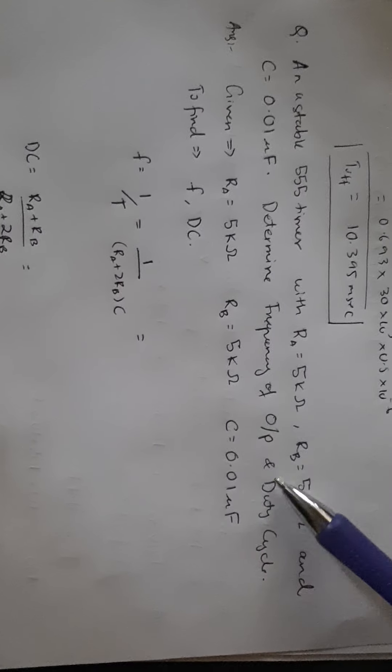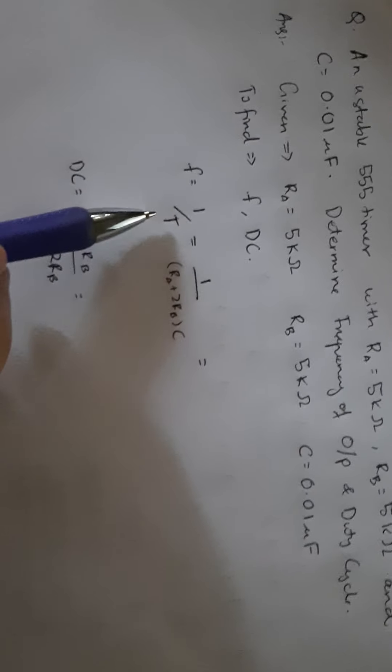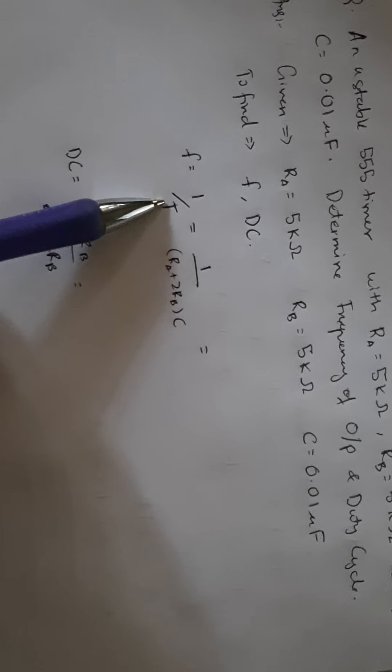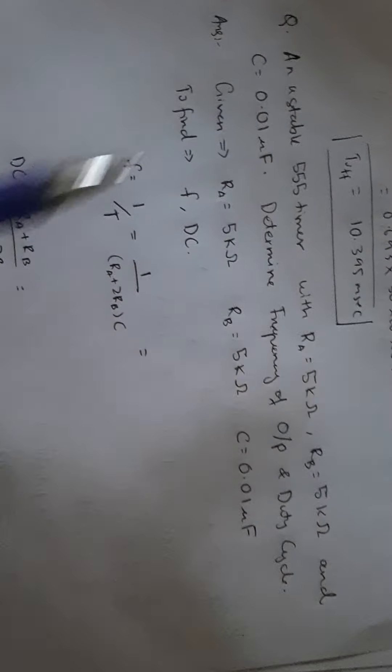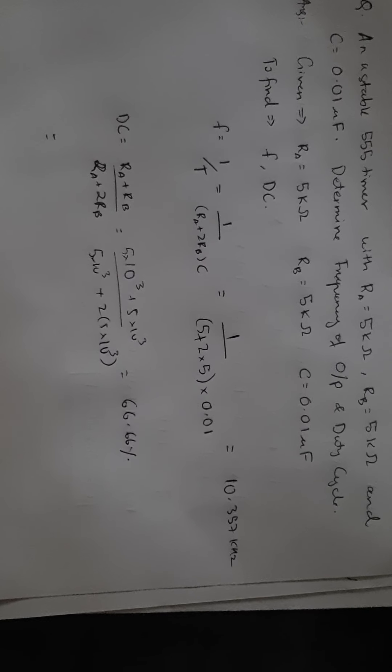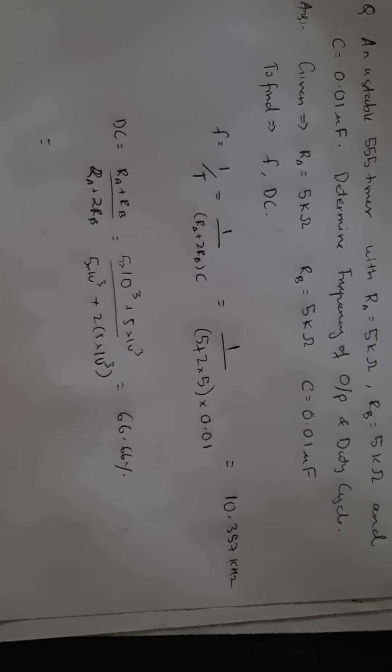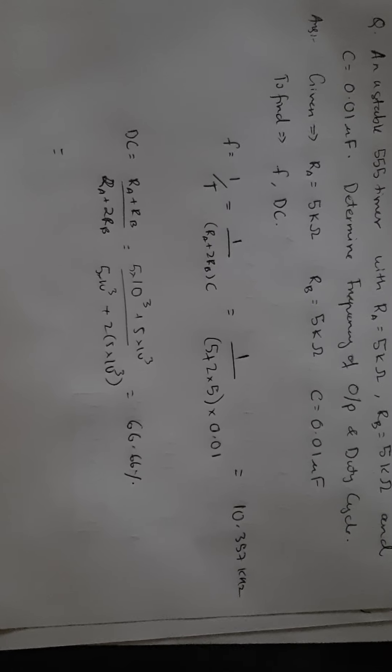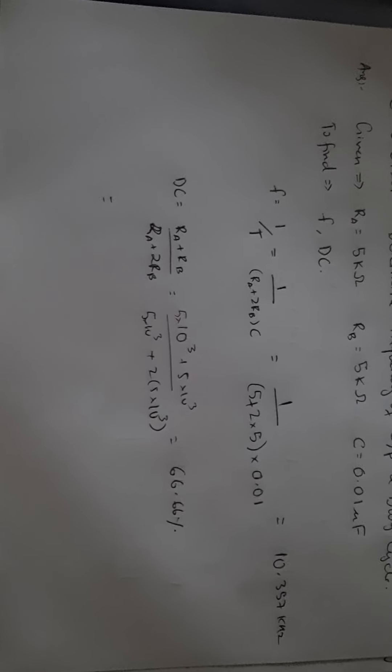For the second type of astable question they can ask for frequency and duty cycle. Frequency is 1 by T, where time period T can be written as (Ra + 2Rb) multiplied by C. Applying the given Ra, Rb, and C values we find f. For duty cycle the formula is T_on by T — total time period. Applying values we get 10.357 kilohertz and duty cycle of 66.66 percent.